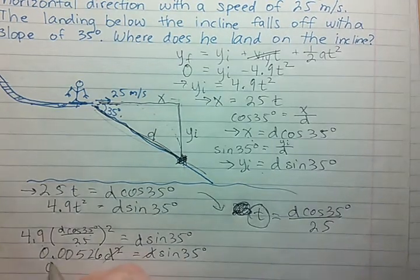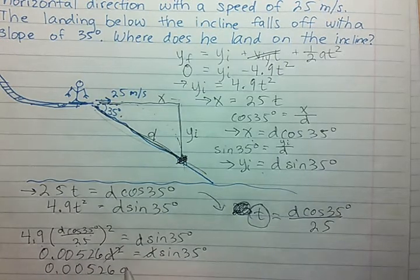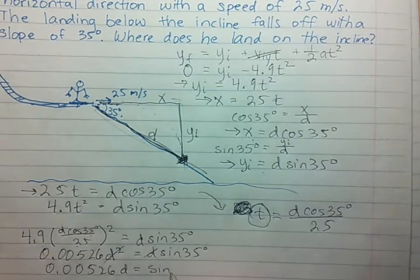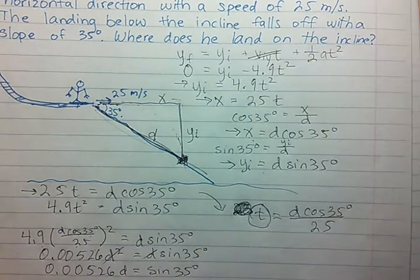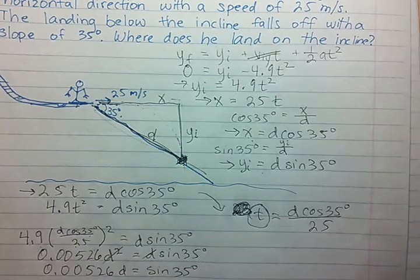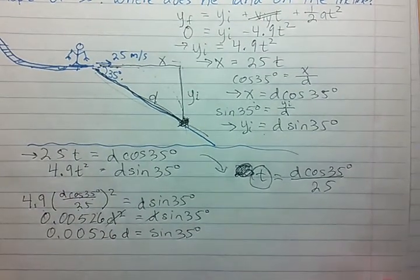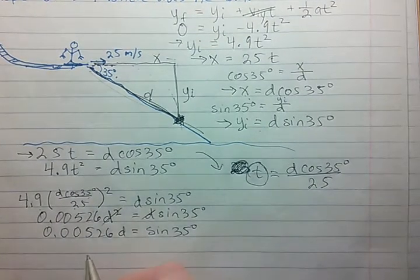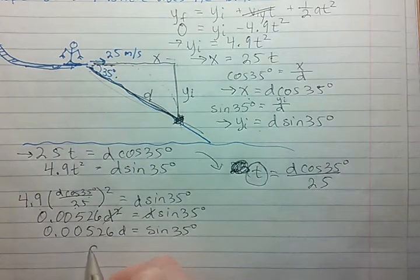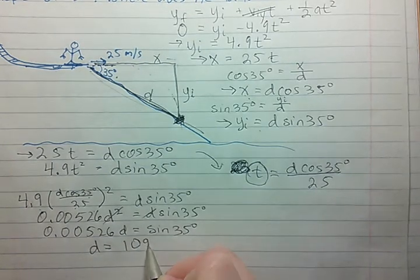Cancel out the d, divide both sides. We'll end up with 0.00526 d equals sine 35 degrees. Then if you divide both sides by 0.00526, you end up with d is equal to 109 meters.